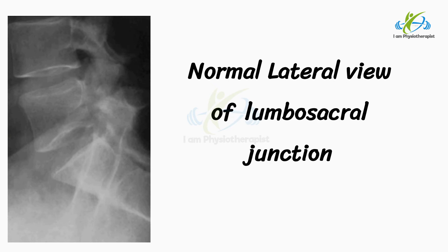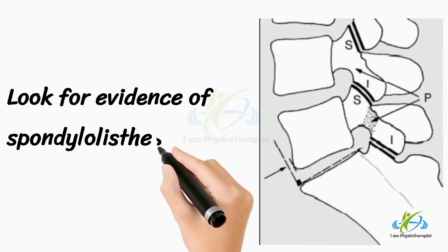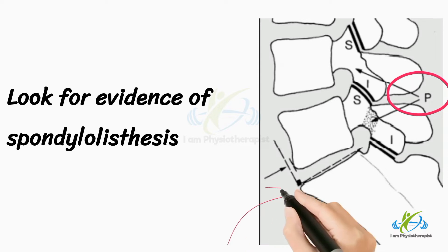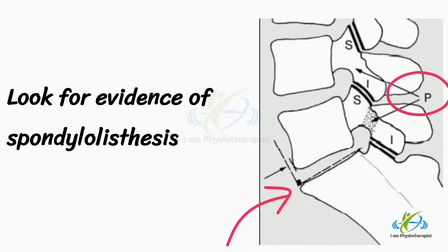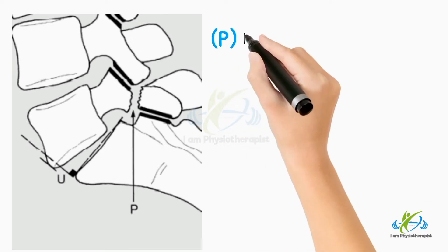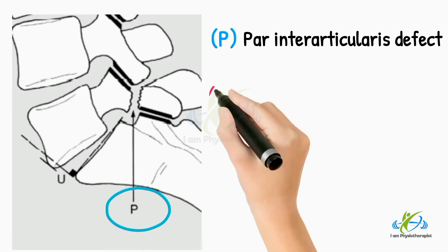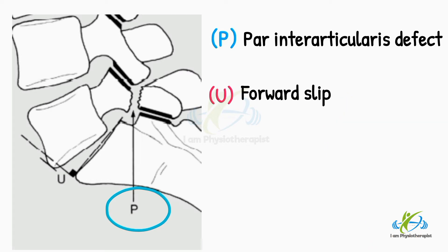Normal localized lateral view of the lumbosacral junction. Look for evidence of spondylolisthesis. In the normal spine, the pars interarticularis indicated by point P, lying between the superior and inferior articular facets, is intact, and a vertical raised from the anterior margin of the sacrum lies in front of L5. If spondylolisthesis is suspected, the lateral should always be taken with the patient standing. Note any defect as indicated by P, and any forward slip as indicated by point U.